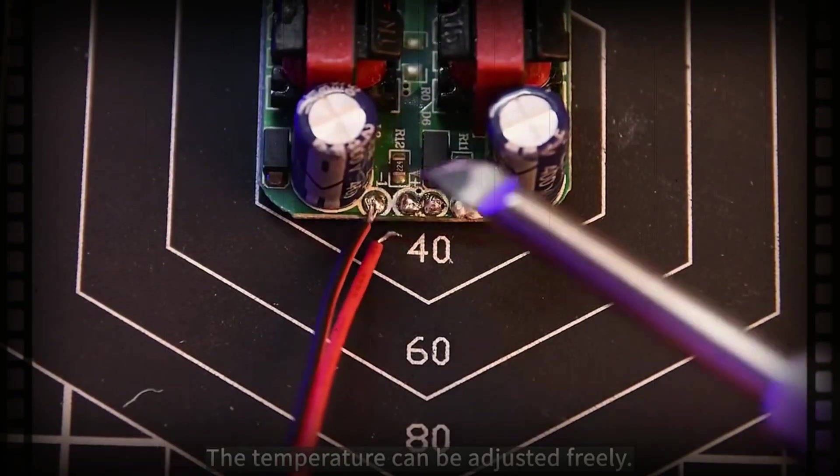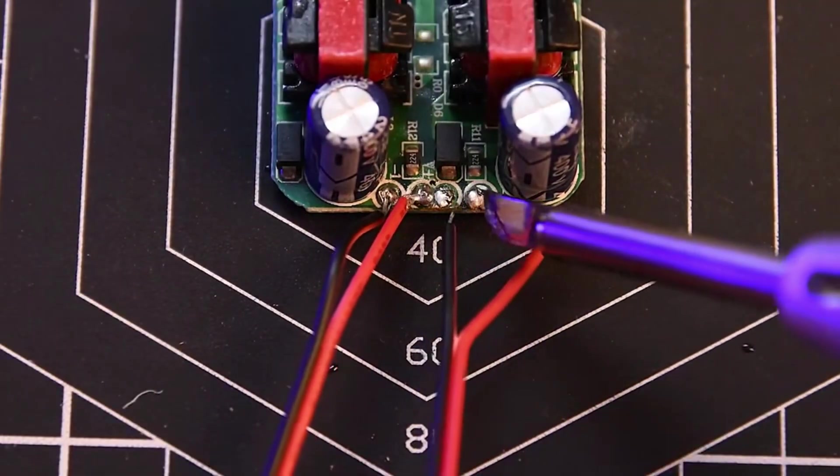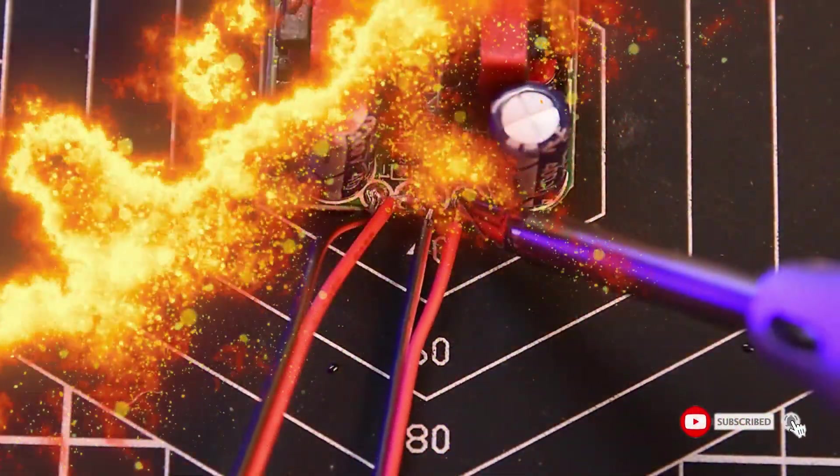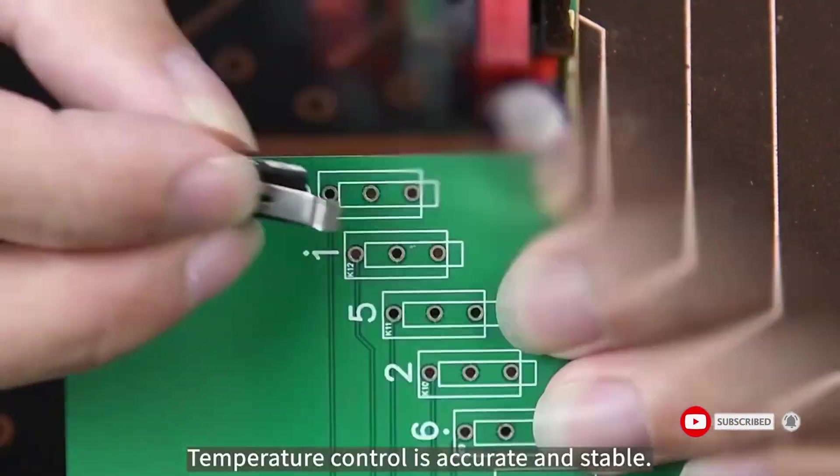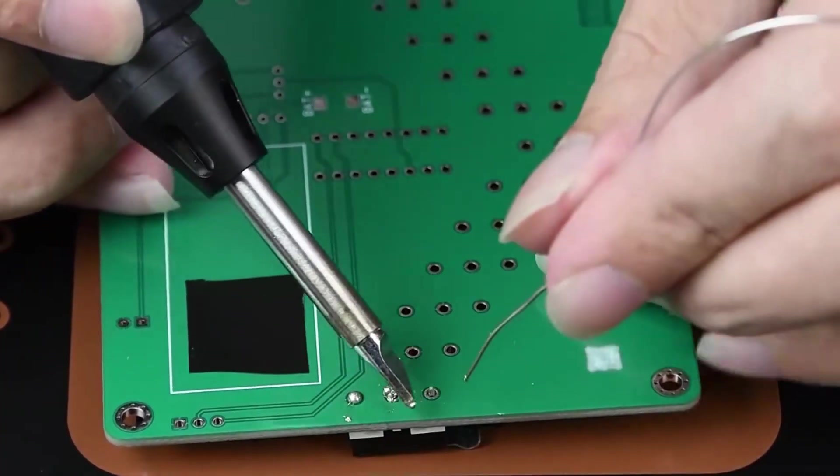The Qming soldering iron kit comes fully equipped with useful accessories: five interchangeable tips for various soldering needs, soldering stand to safely hold the hot iron, solder wire, sponge, and soldering paste, compact and portable form factor.